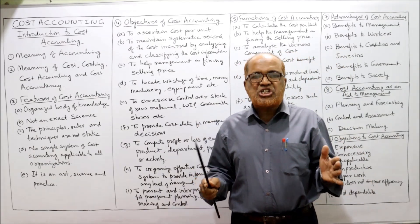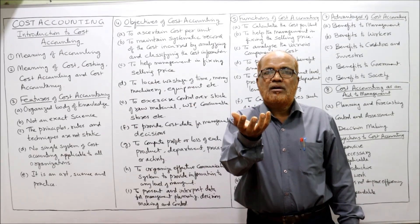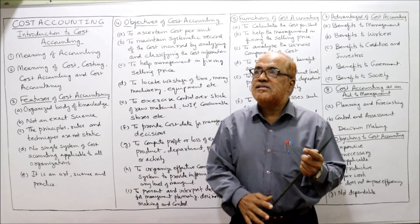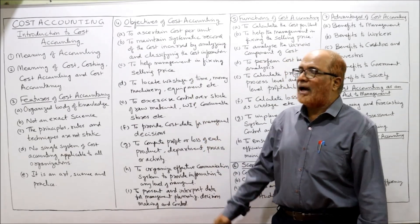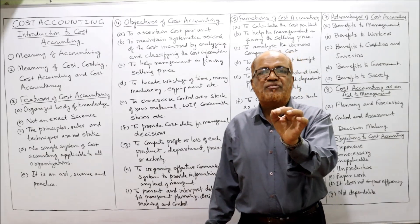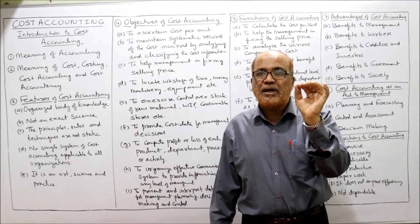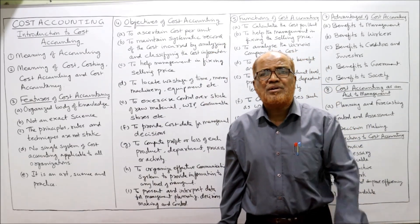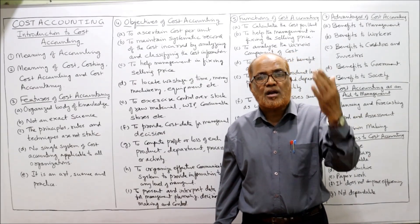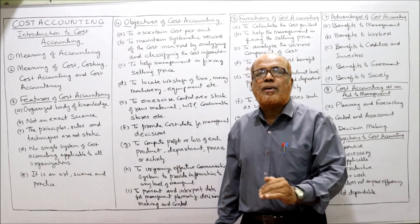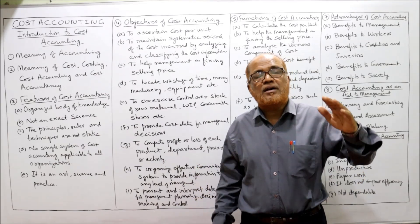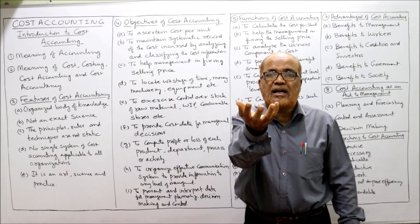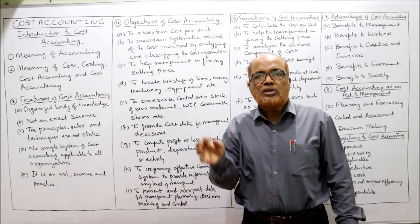Another objective is collecting, classifying, and summarizing cost information. Third, to help management in fixing the selling price — the selling price must be carefully fixed. If arbitrarily fixed too high, no customers will be attracted; if fixed too low, the business will incur losses. So a reasonable price must be set, which is only possible after calculating cost through cost accounting.